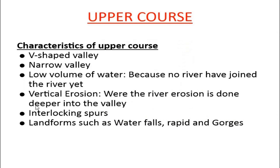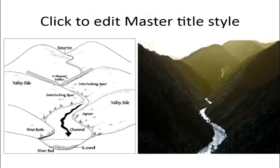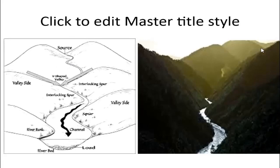This is just another diagram indicating the interlocking spurs as the river goes around them, looking for the easiest path. You can clearly see that the river valley is also narrow and that most of the erosion taking place here is vertical. You can also see the V-shape as you look upstream — that is what we refer to as a V-shaped valley. Very important: V-shaped valley.